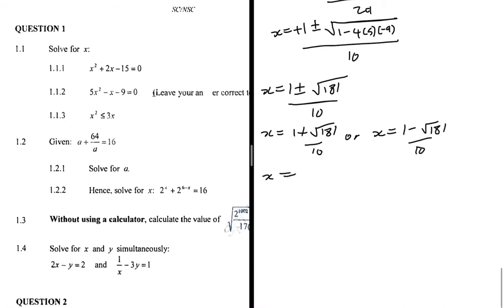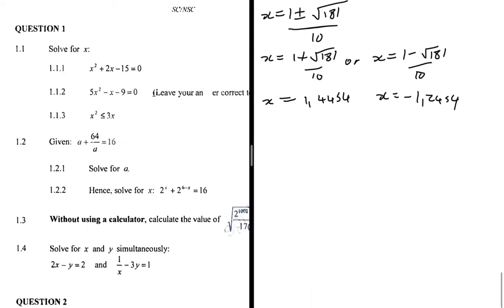Running those through the calculator gives x ≈ 1.45 or x ≈ -1.25. Now we move to 1.1.3: x² ≤ 3x.